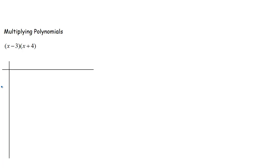So here we go — I'm going to multiply x plus negative 3, and I'm going to multiply that by x plus 4. Now x minus 3 and x plus negative 3 are the same thing — it just looks a little different. I like to tell my students it's kind of like a makeover.